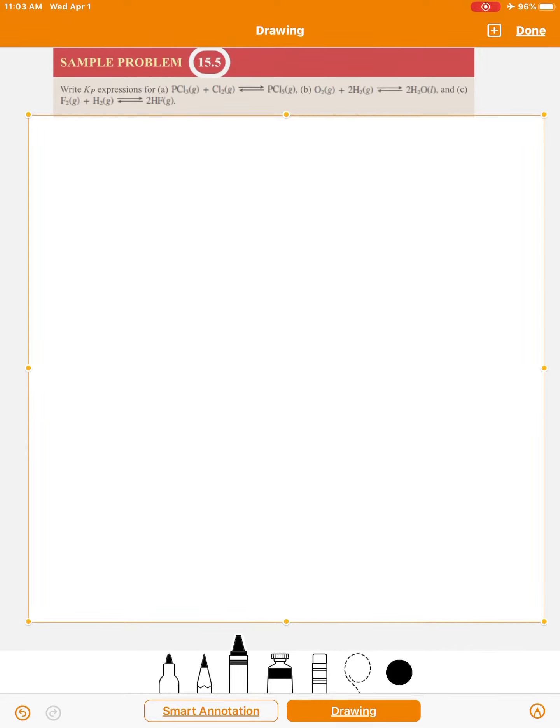Sample problem 15.5. Write Kp expressions for A, PCl3 plus Cl2 goes to PCl5.